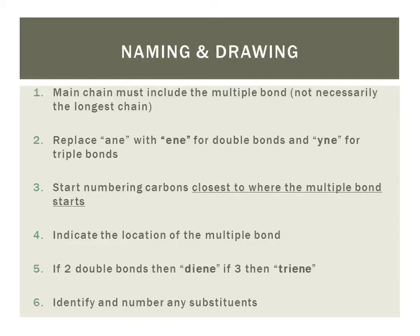Now when we number, we want to number the main chain by starting at the end of the chain nearest the double or triple bond, giving the double bond the lowest possible carbon numbers. Now our name needs to indicate where that double bond is, so we're going to give the double bond a number, and it's going to be the number of the carbon atom that precedes the double bond, or the number of that first carbon atom that is part of the double bond.